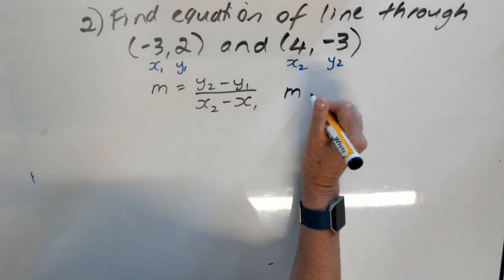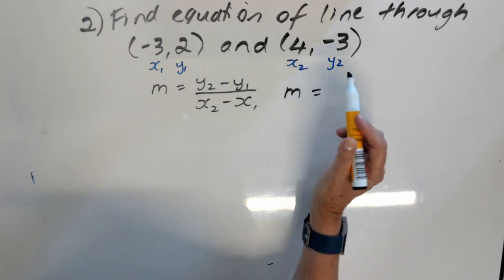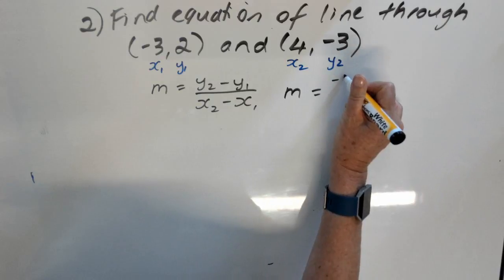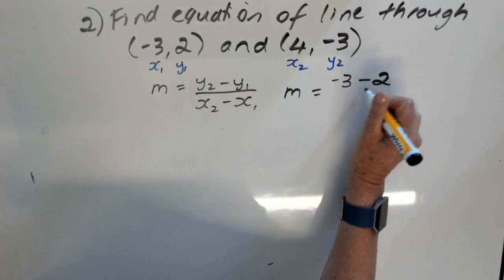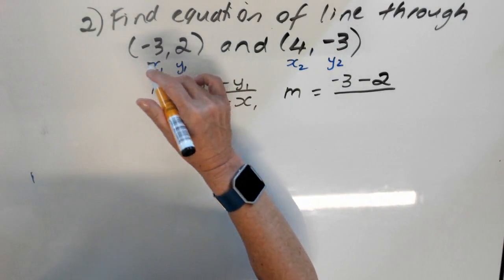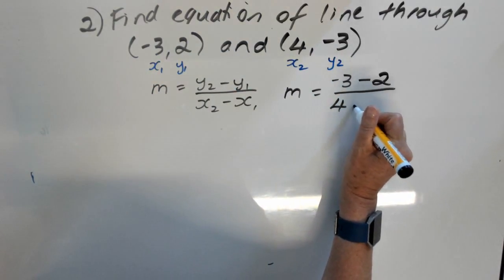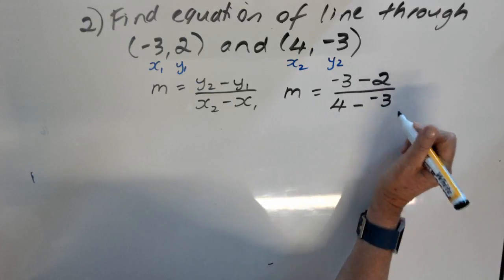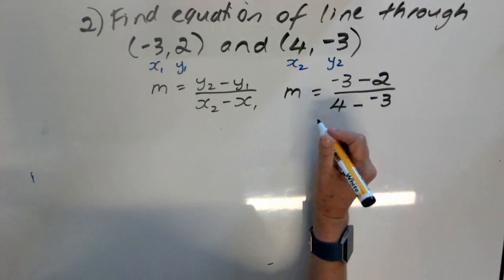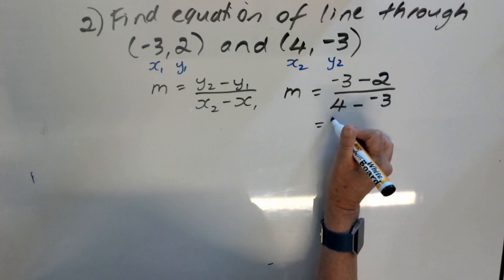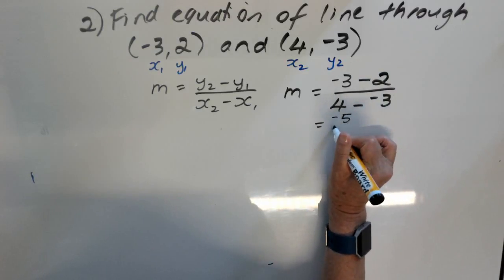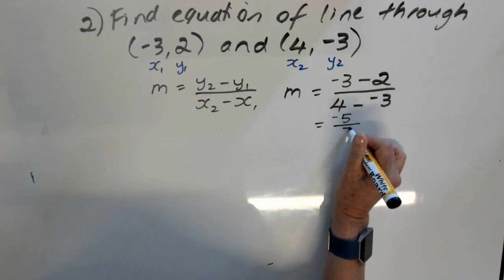I'm going to write m equals y2, negative 3, minus 2, x2 minus x1, 4 minus negative 3. Take care with those signs. When we work them out, negative 3 minus 2, which you can use a calculator for, negative 5, 4 minus negative 3 is 7.